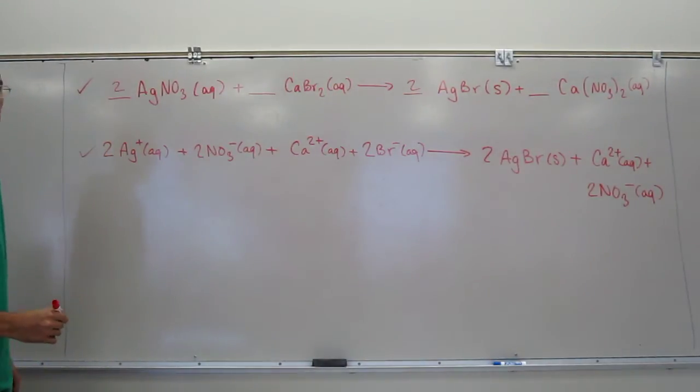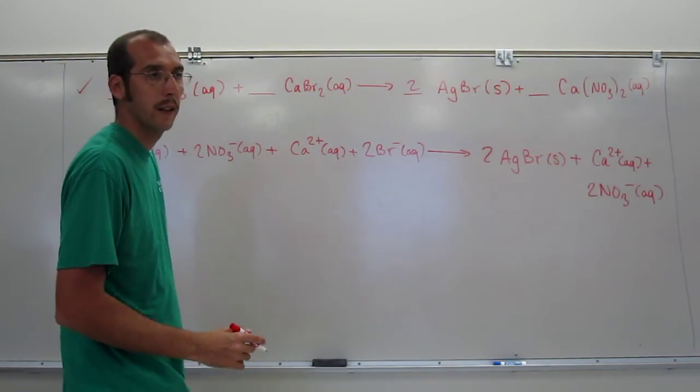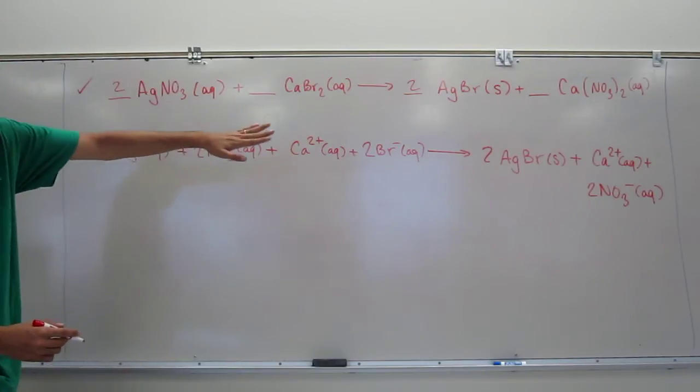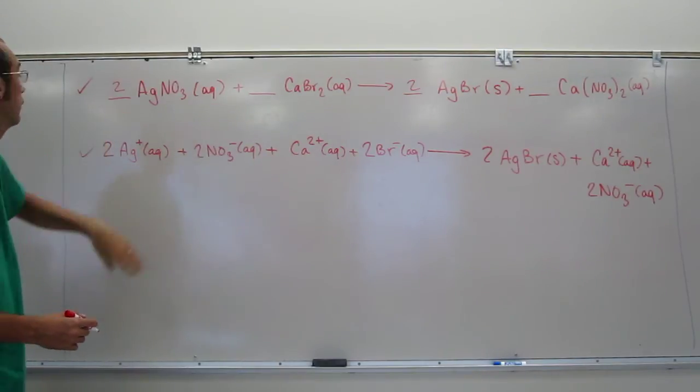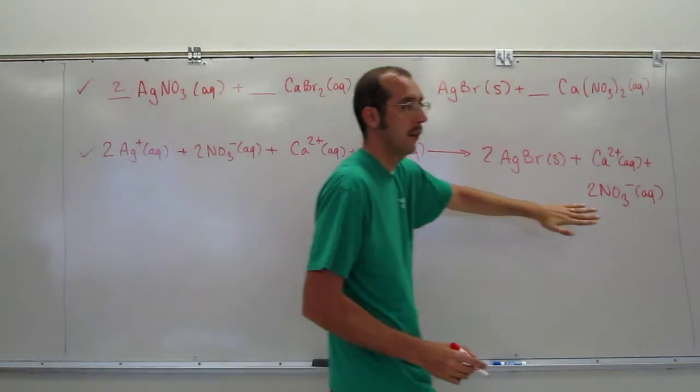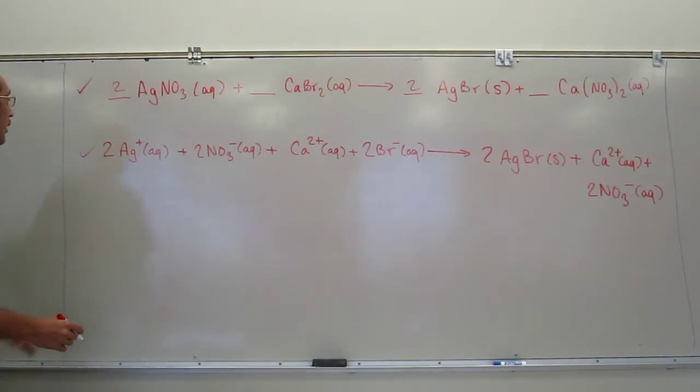And then the net ionic equation is just everything that changed. So, did Ag plus change to something else? Or is Ag plus in this side of the equation? No, so you got to keep it.